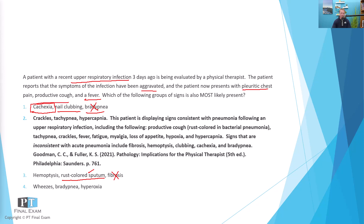The last incorrect answer: wheezes, or wheezing, is less likely here. Wheezing is when you have bronchoconstriction — it's much more likely you'd have crackles. Bradypnea is again the opposite of what you'd expect. And hyperoxia — too much oxygen — would not be present; rather, you'd have hypoxia, or too little oxygen.